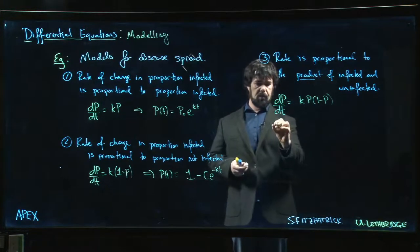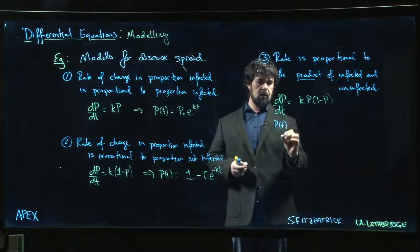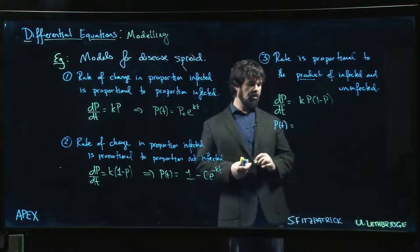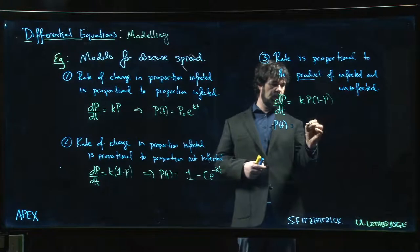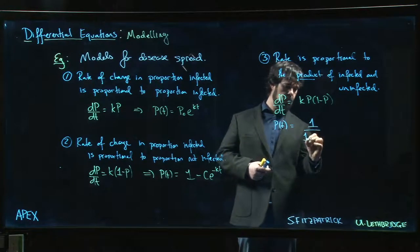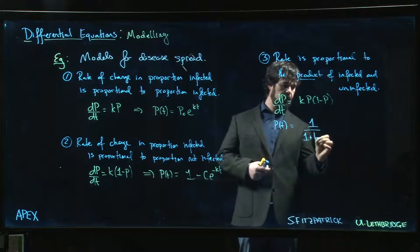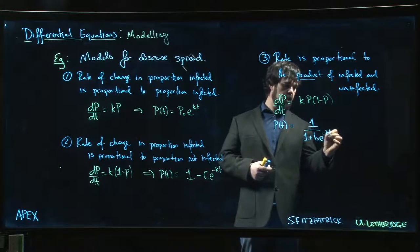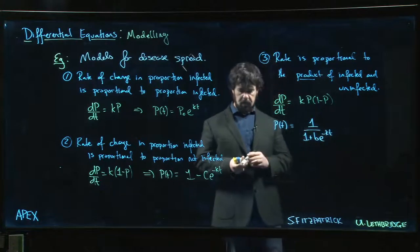We've seen how to solve this one before. We get something that looks like this: the proportion of the population as a function of t will look like 1 over 1 plus some constant b times e to the minus kt.